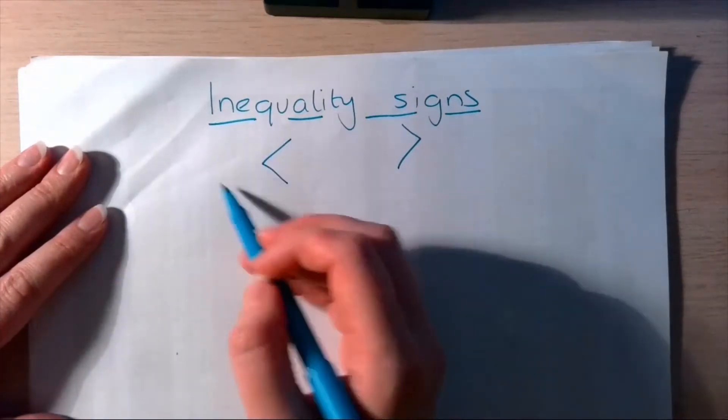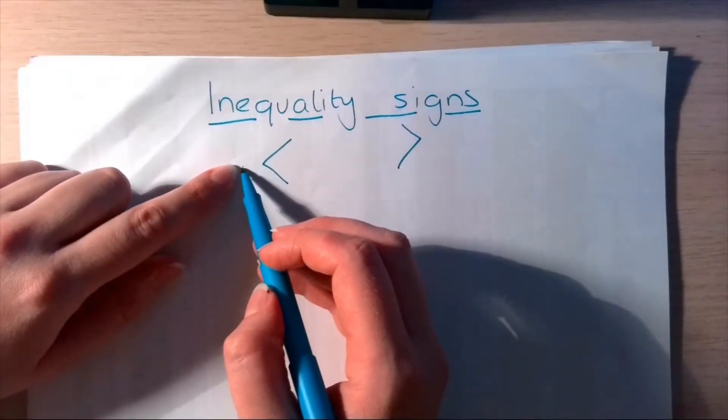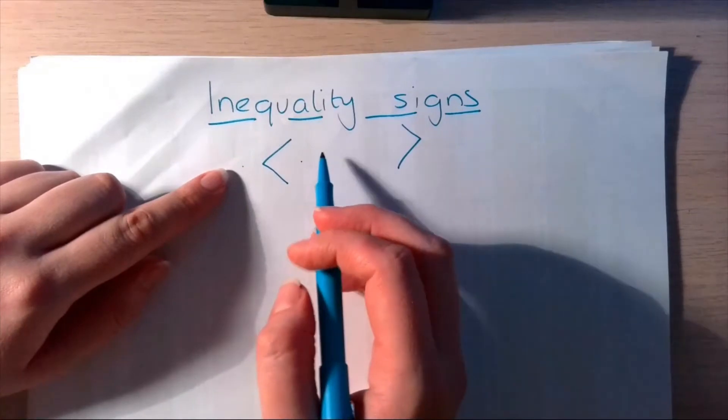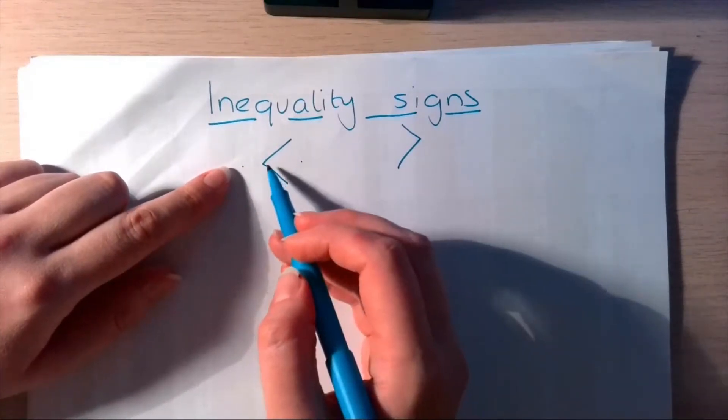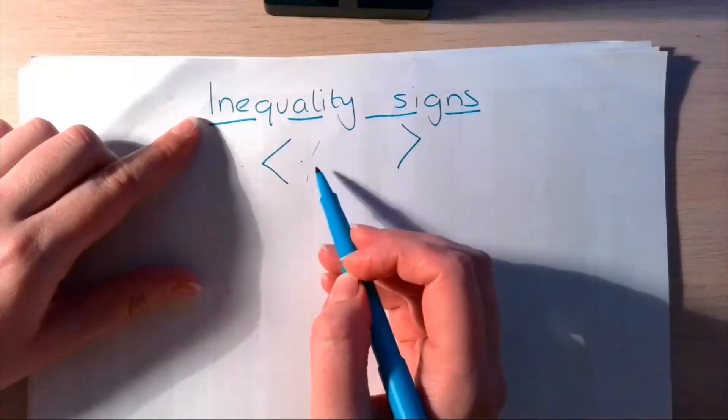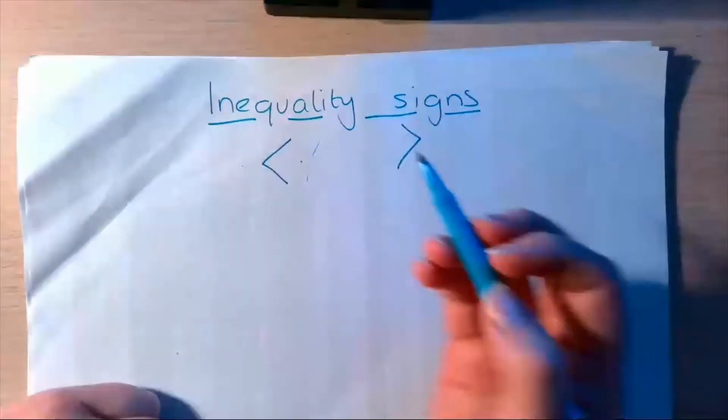So, this one here that I've drawn pointing this way, it means the number on this side is smaller than the number on this side. This is the big side. And I know what a lot of you learned in primary school is that the crocodile mouth opens to the bigger number, because it wants to eat it. It works. If it helps remember it, brilliant. I really like that analogy.